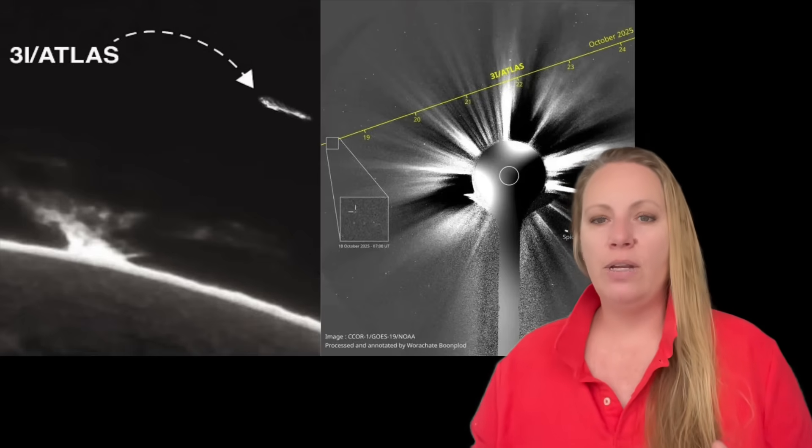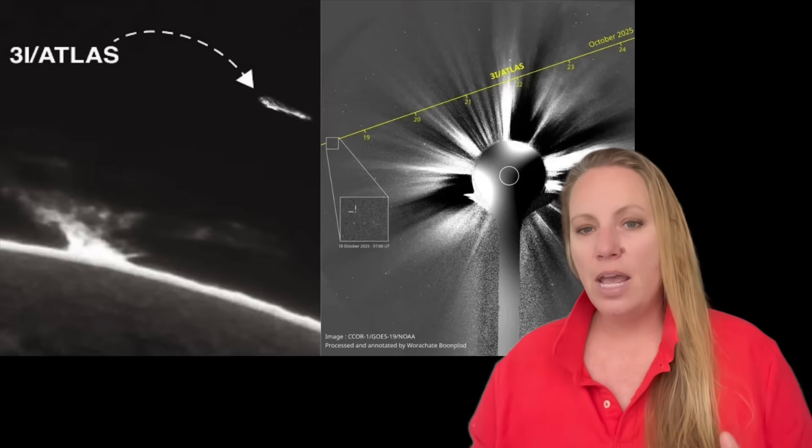3i Atlas passed perihelion exactly four weeks earlier, so this image was taken after its closest approach to the sun when it was hidden from us. That timing is important because there was a big change - the color turned green.